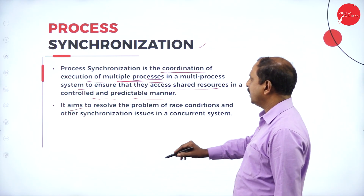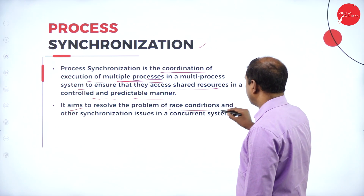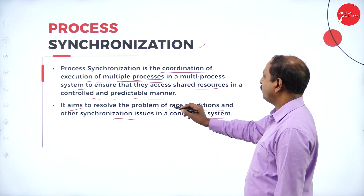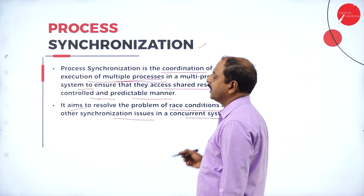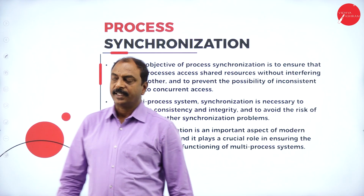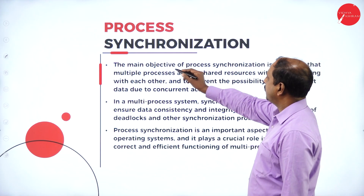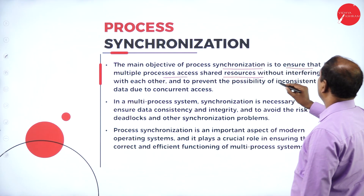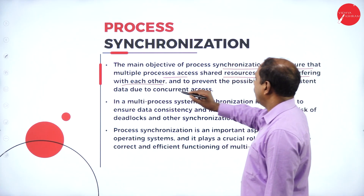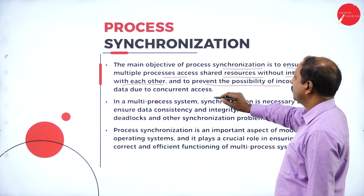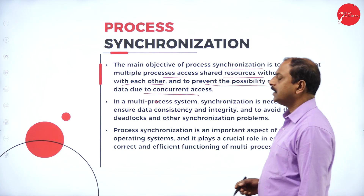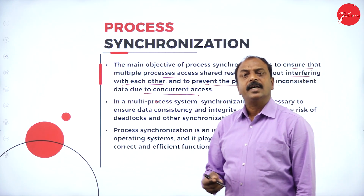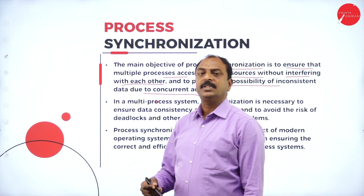Process synchronization aims to resolve the problem of race condition and other synchronization issues in concurrent systems. The main objective is to ensure that multiple processes access shared resources without interfering with each other, and to prevent the possibility of inconsistent data due to concurrent access. In a multi-processing system, processes will share resources without affecting other processes accessing the same resources.